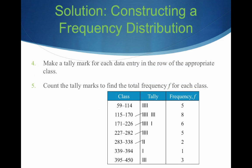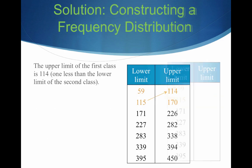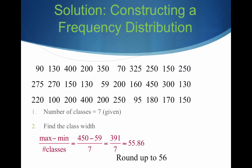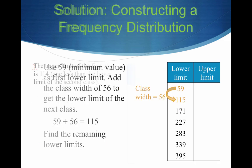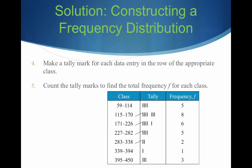Now we go through our data and make a tally mark for each entry in the appropriate class. For example, the first number 90 falls between 59 and 114, so it gets a tick mark there. We do this for all data, then add up the tick marks to get our frequencies. So we have 5 entries between 59 and 114, and 8 portable GPS navigators priced between $115 and $170, and so forth.